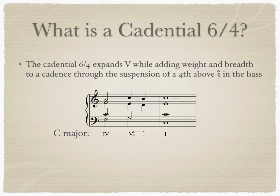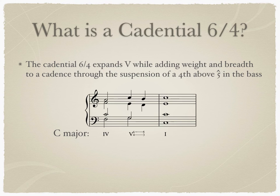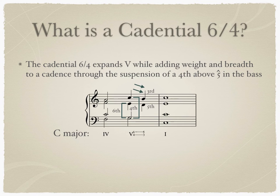Below you can see a perfect authentic cadence in C major. Here's what it sounds like. On the downbeat of beat 3, there's a chord with a 6th and a 4th above the bass. The 6th moves down by step to the 5th, and the 4th resolves to the 3rd, to create a root position 5-3 chord with the bass. This whole configuration is what I mean when I say cadential 6-4. The setup and the resolution are both important.